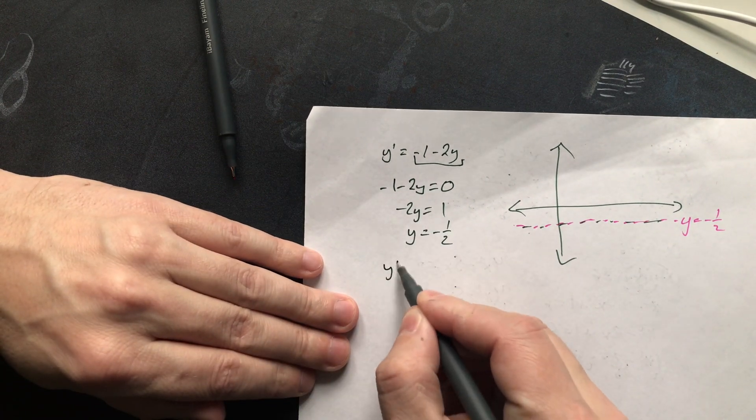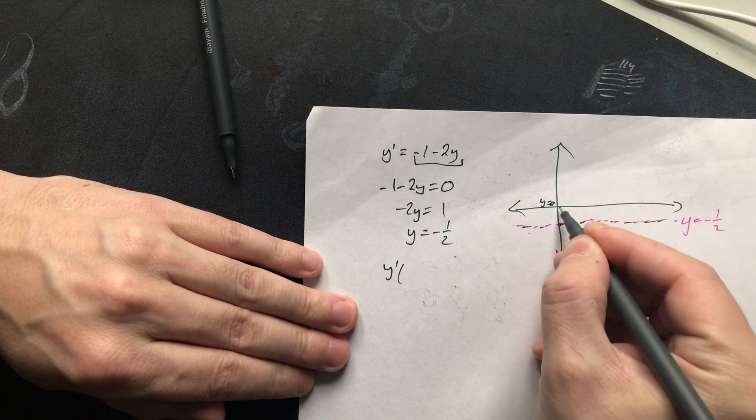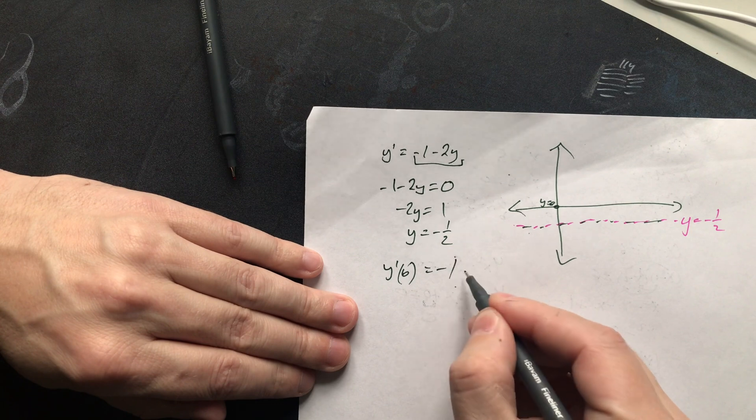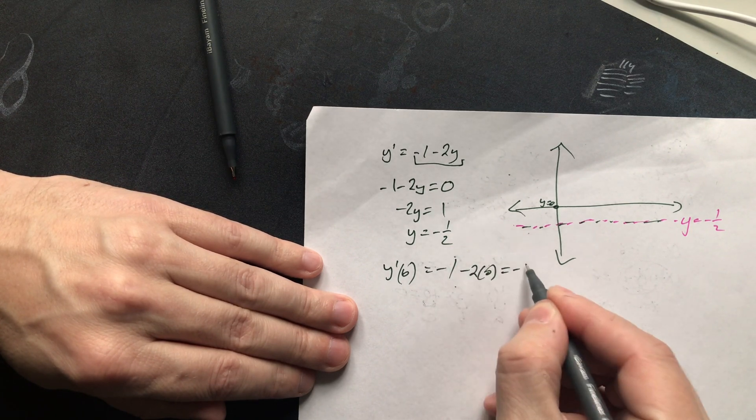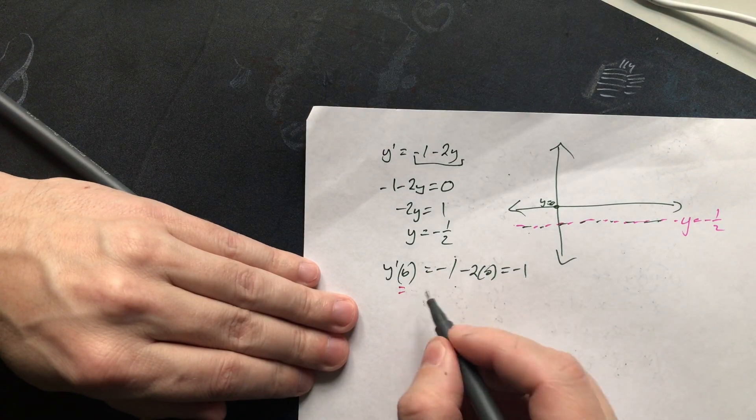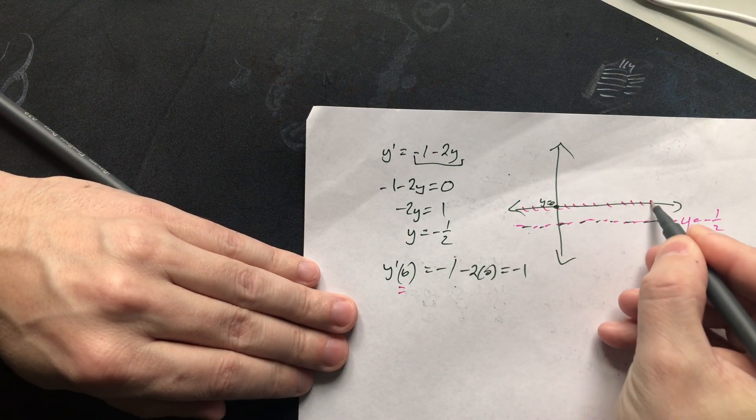You can say y prime and then just evaluate it at different values. Like when y is 0, what happens right here? Plug in 0 basically. So you're going to have negative 1 minus 2 times 0, which is negative 1. So it tells you along this line right here, y equals 0, then the slope looks like this. There's slopes, lineal segments are slope negative 1.